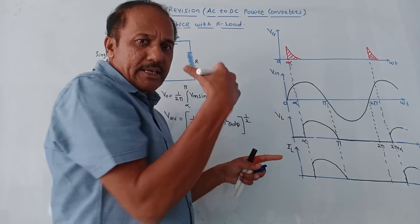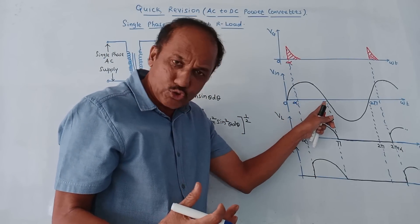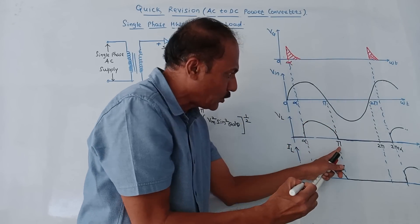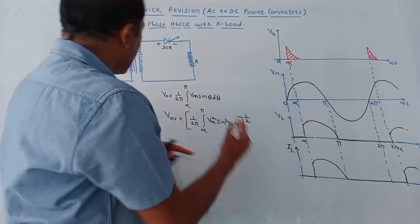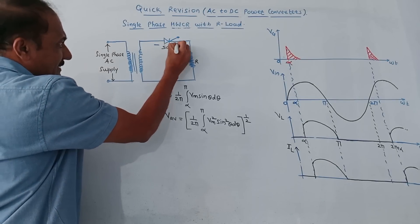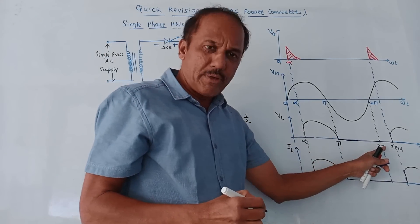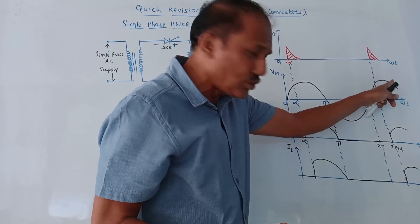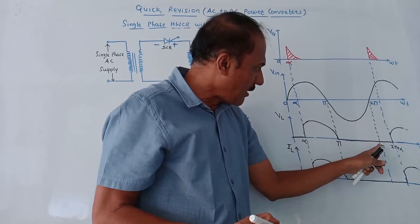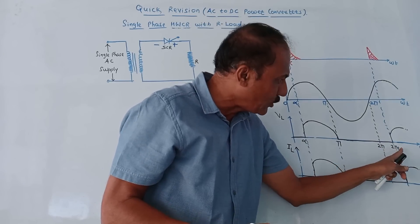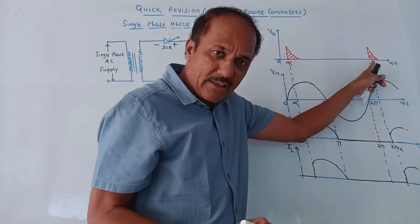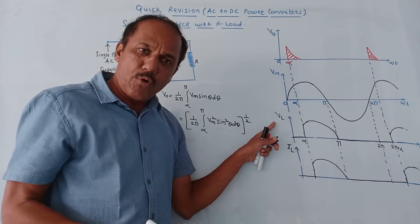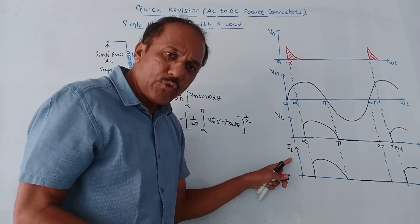From zero to alpha, the SCR will be in forward blocking mode. From alpha to pi, the SCR will be conducting. After pi, the negative half cycle starts, polarities are reversed — this is minus, this is plus — and in that case the SCR will not be forward biased, so it acts as an open switch. Again at two pi the positive half cycle starts, and the SCR is in forward blocking mode from two pi to two pi plus alpha, because again at angle alpha we apply the gate pulse and conduction starts again.